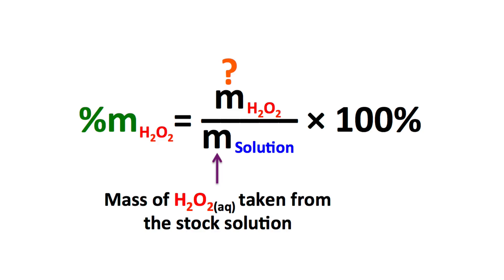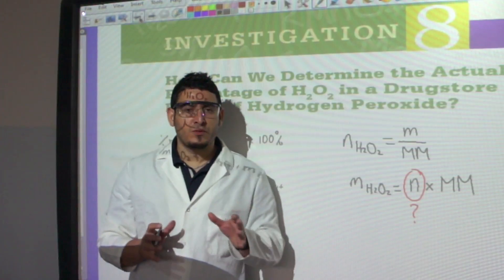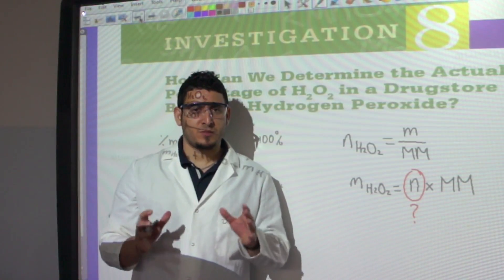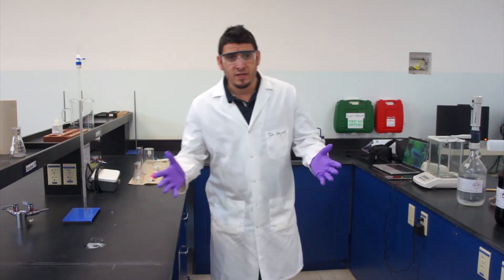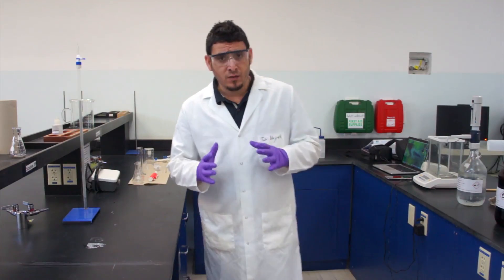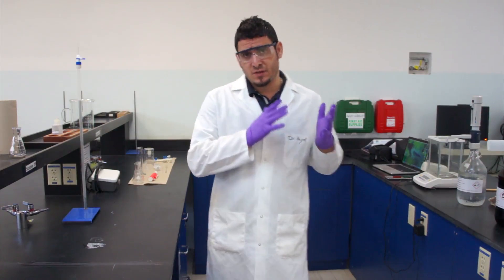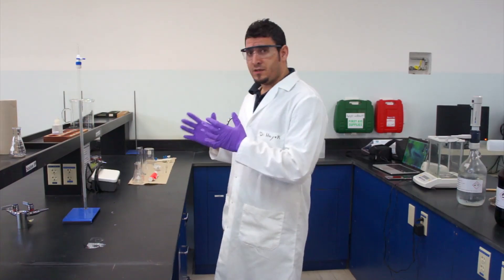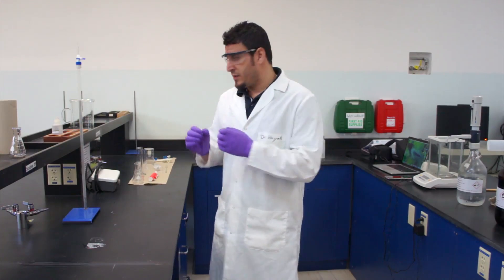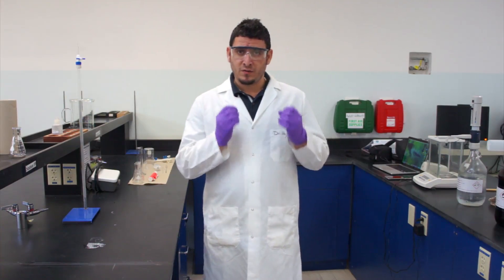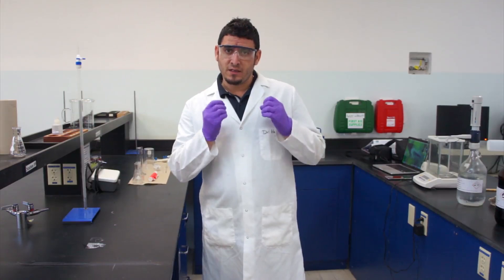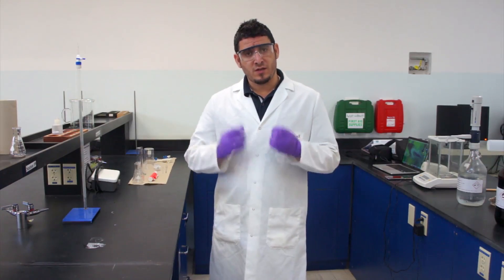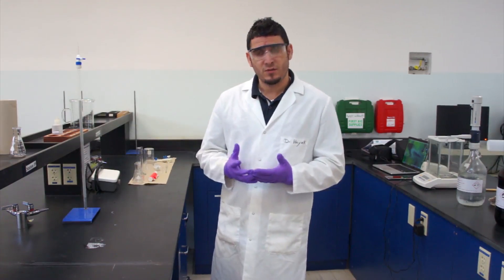Now let's go back and I will show you the details of the experimental procedure. Now that we have discussed the stoichiometric calculations, we will carry out the experiment to find the missing data, starting first by setting up the experiment.